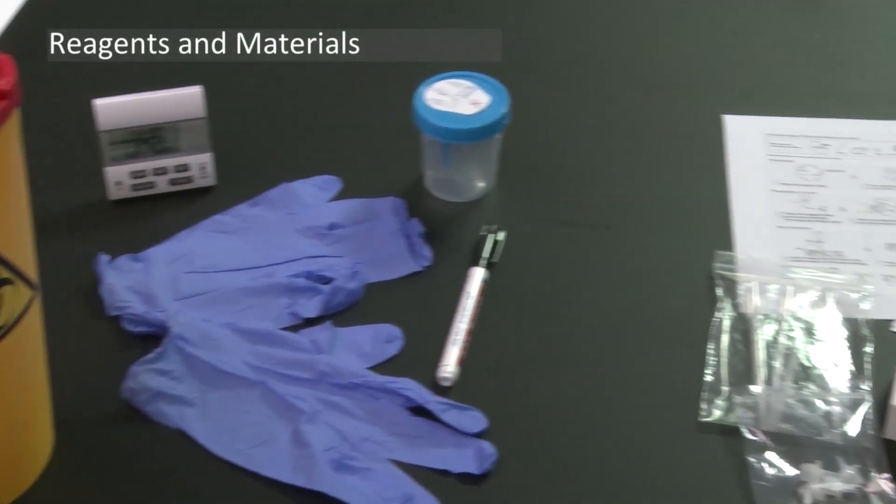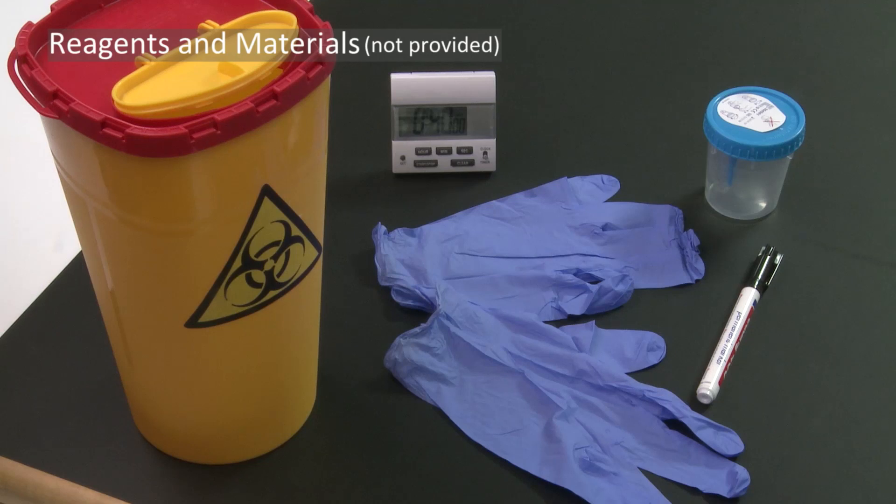The following materials are required but not provided: a urine collection cup, a timer, gloves, a permanent marker and a waste bin.